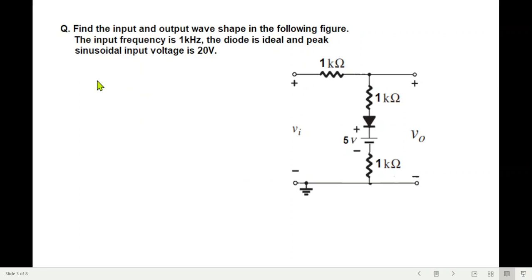Now the question sent by the student: find the input and output wave shape in the following figure. The input frequency is 1 kilohertz, the diode is ideal and peak sinusoidal input is 20 volt. This is the circuit, you can see there are three resistances, one diode and a 5 volt battery. Now this 5 volt battery is actually doing a reverse bias or reverse biasing this diode where the positive of the battery is connected with the negative of the diode. So the diode will remain reverse biased till such time input overcomes this 5 volt.